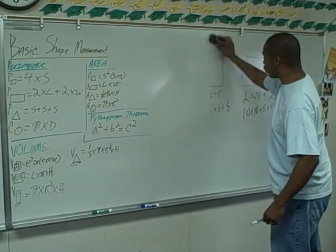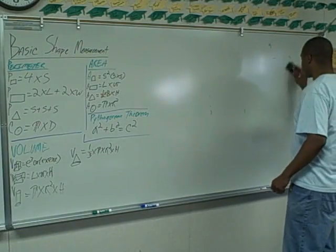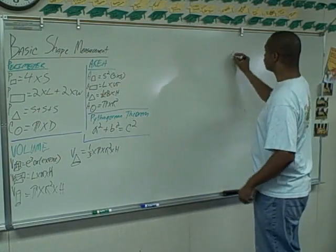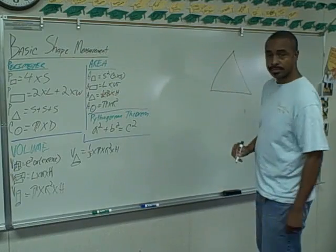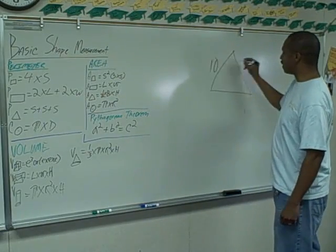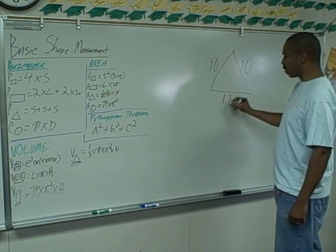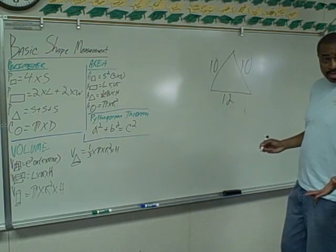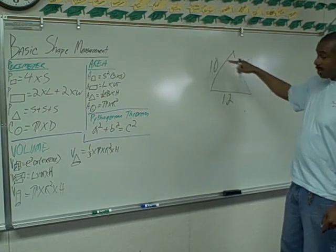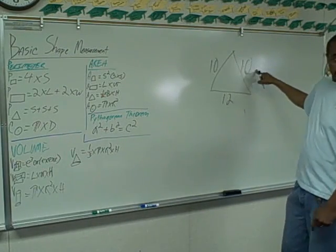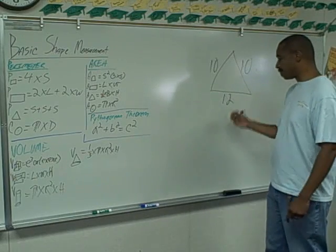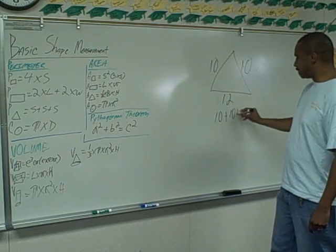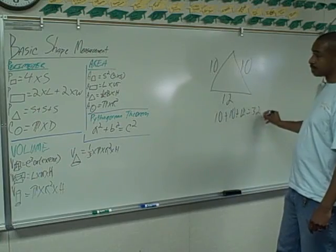The perimeter of a triangle is a little bit different, but same idea. If this side is ten, this is ten, and this is twelve, you simply add up the sides: ten plus ten plus twelve, which gives us thirty-two.